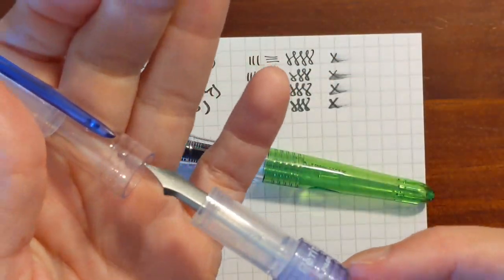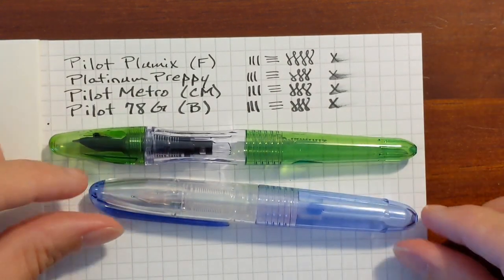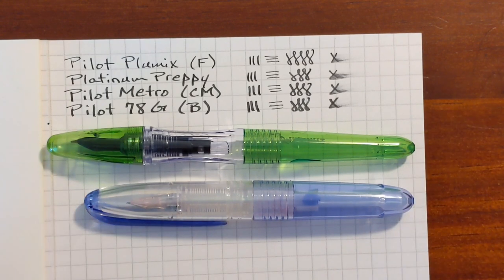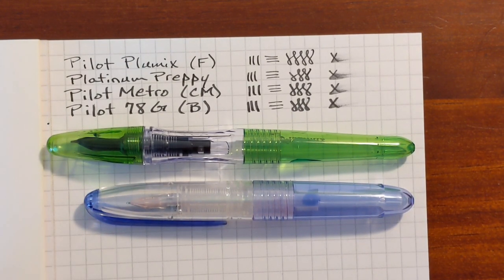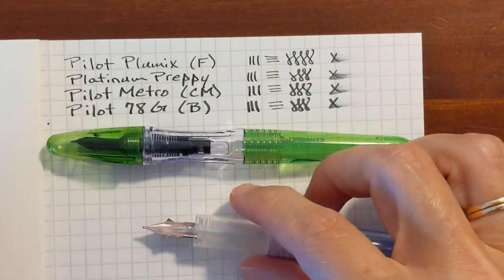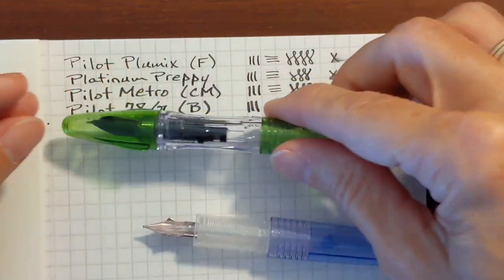The Petite One has a snap cap and is just about a centimeter shorter. So the Petite One has a snap cap and the Pluminix has a threaded cap.